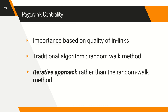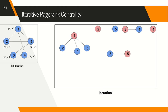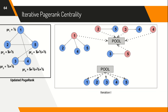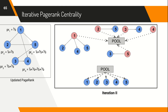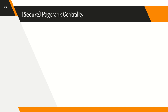We therefore resort to the iterative approach to computing PageRank centrality. All nodes begin with an equal PageRank value of 1. In each iteration, every node distributes a fraction of its PageRank value equally among its neighbors through outgoing links, and the remaining PageRank value is contributed to a common pool. At the end of the iteration, the total PageRank value in the pool is equally distributed among all nodes, and the new PageRank value of each node is updated. This process of redistributing PageRank values continues for a predetermined number of iterations.